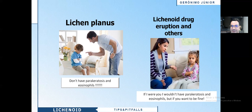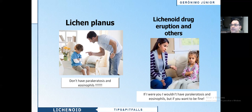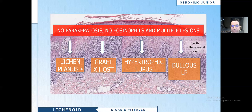When facing classic lichen planus, think of it as a strict rule: no parakeratosis and no eosinophils. On the other hand, when facing a lichenoid drug eruption and other differential diagnoses in lichenoid dermatitis, these features may or may not be present. So if you have no parakeratosis, no eosinophils, and multiple lesions, think about lichen planus and variants, graft-versus-host disease, and hypertrophic lichen planus. If you also see subepidermal clefts, think about bullous lichen planus.